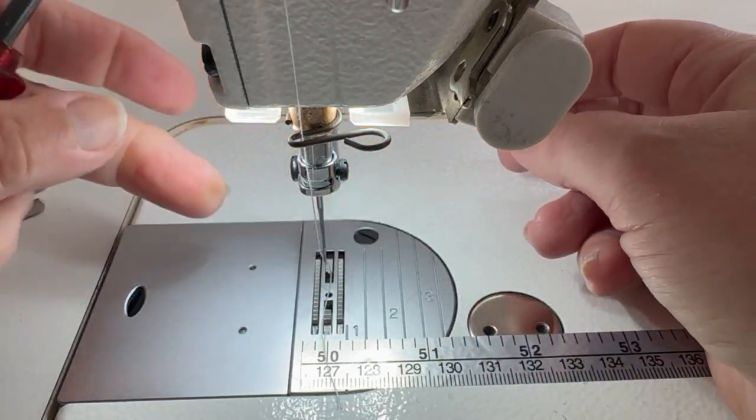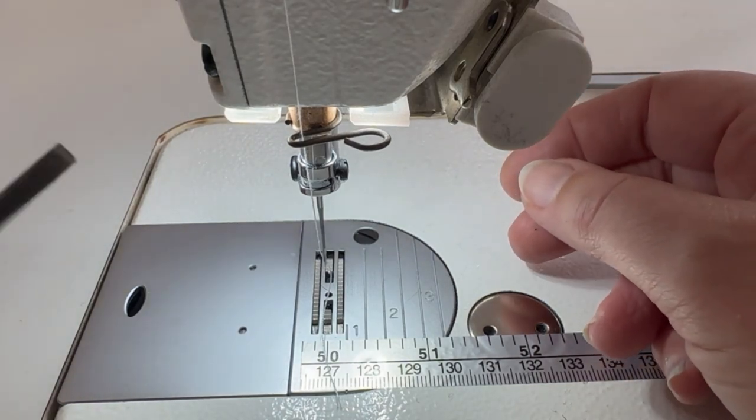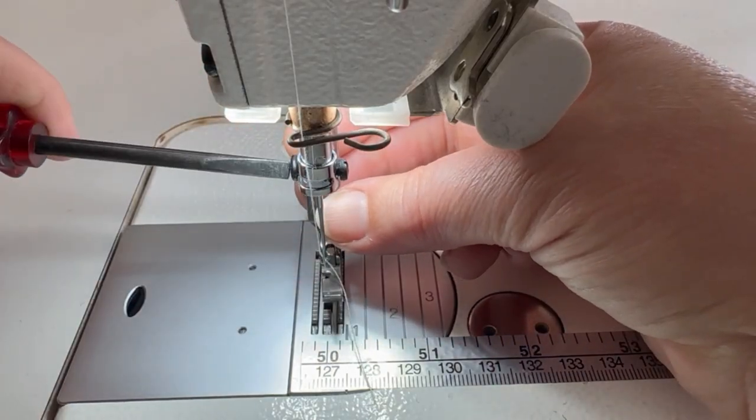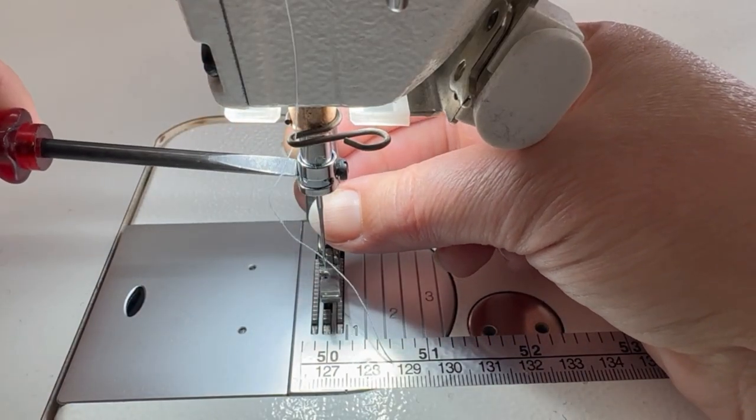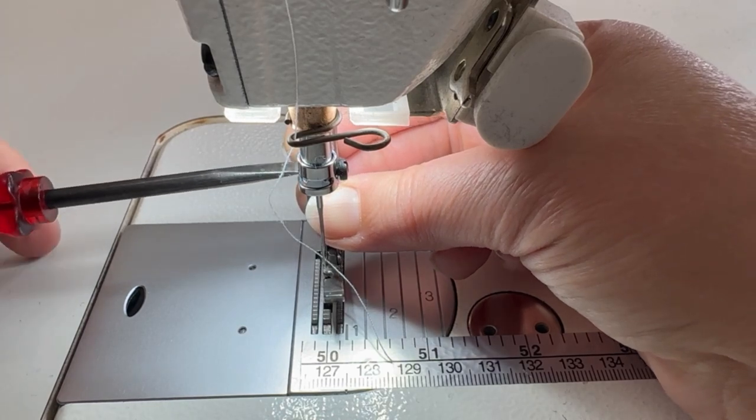You don't need to take the screw out completely, just enough to allow it to come out. I would advise not taking the screw out completely. Then you replace that with the one-sided foot and tighten the screw back up, making sure that you tighten it so it's nice and tight.